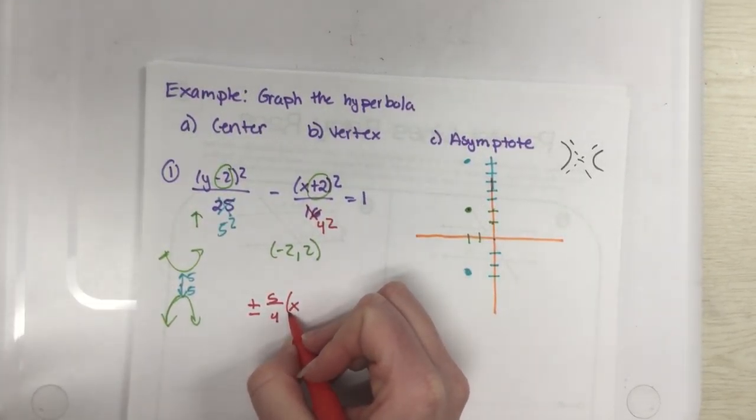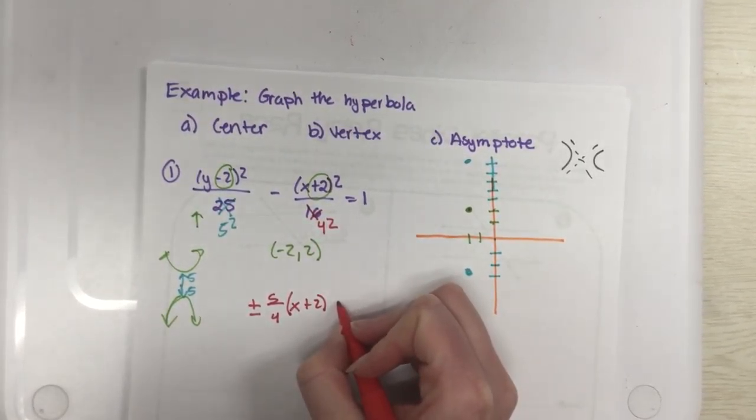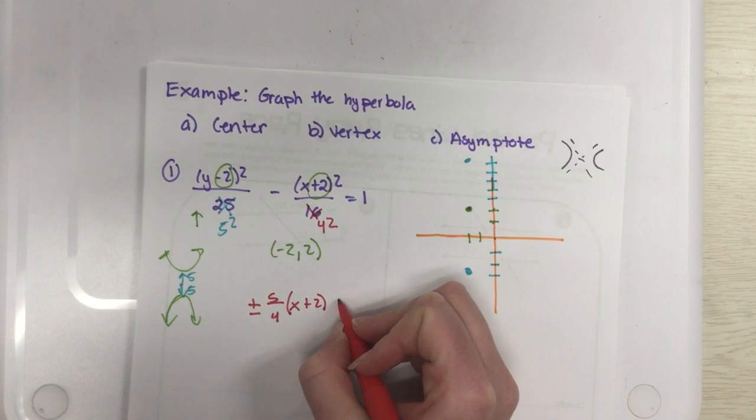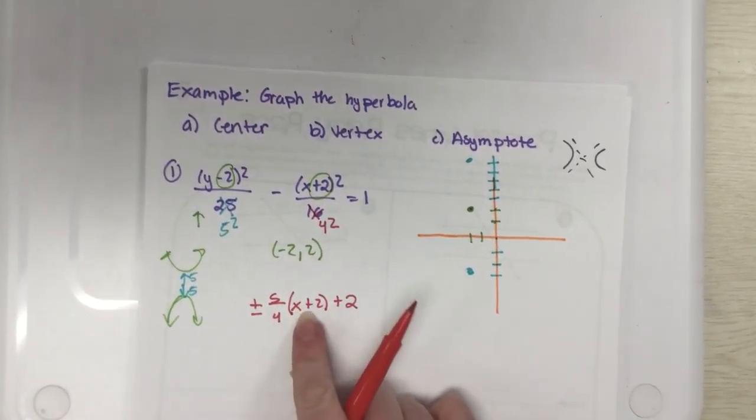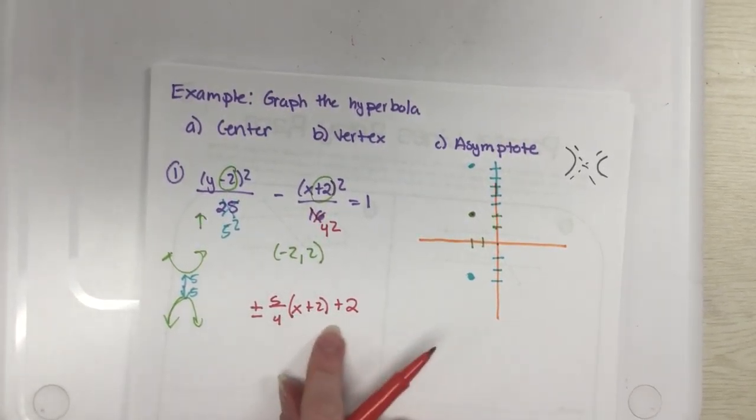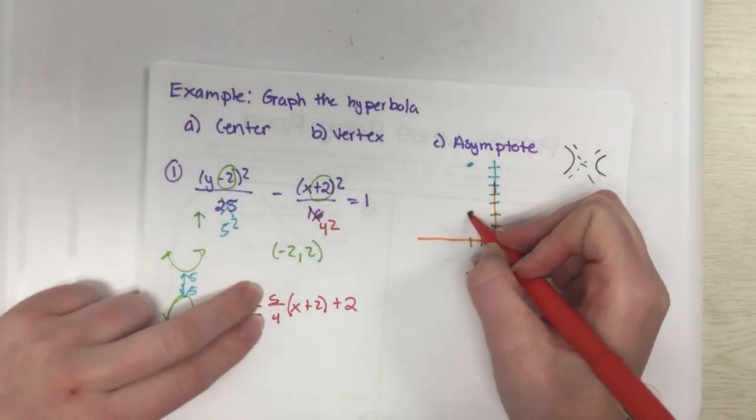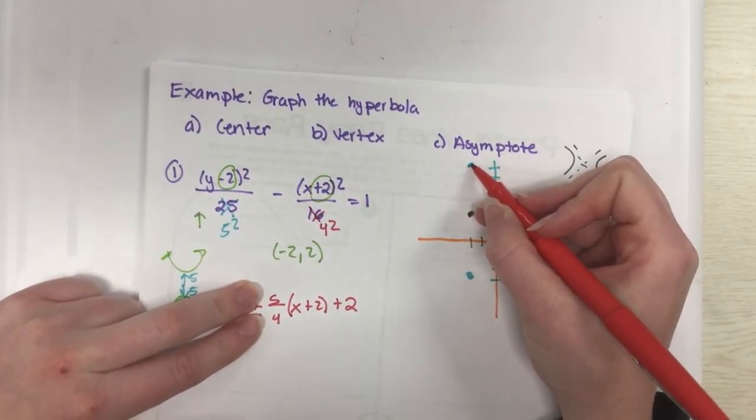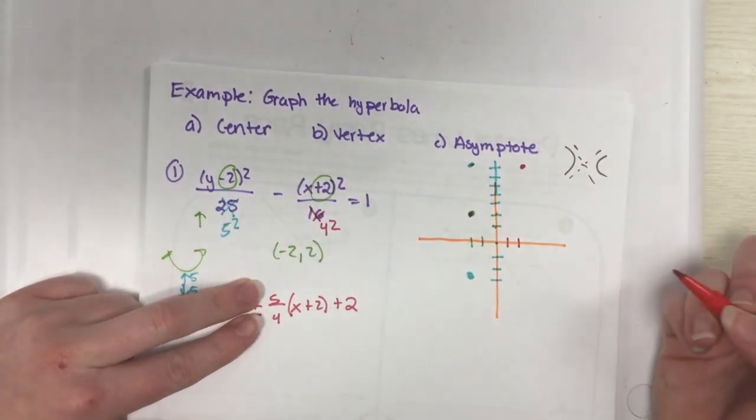Plus or minus 5, and my run, well 16 is really 4 squared, so my run would be 4. Rise over run, my y over my x. Then technically the equation would be x plus 2 and then we want to actually be up 2, so plus 2 again. Inside parentheses opposite, outside is regular.